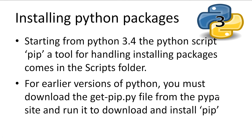A very useful part of Python is the abundance of third party packages that we can use with our programs, but we need to know how to install them on our Windows system. Installing Python packages manually can be a huge pain. Luckily someone has written a program to do this for us called pip. Starting from Python 3.4, the pip tool comes by default and is located in the scripts folder of your Python directory. If you are using an earlier version of Python, you must download the get-pip.py file from the pip website and run it. A link will be in the description.